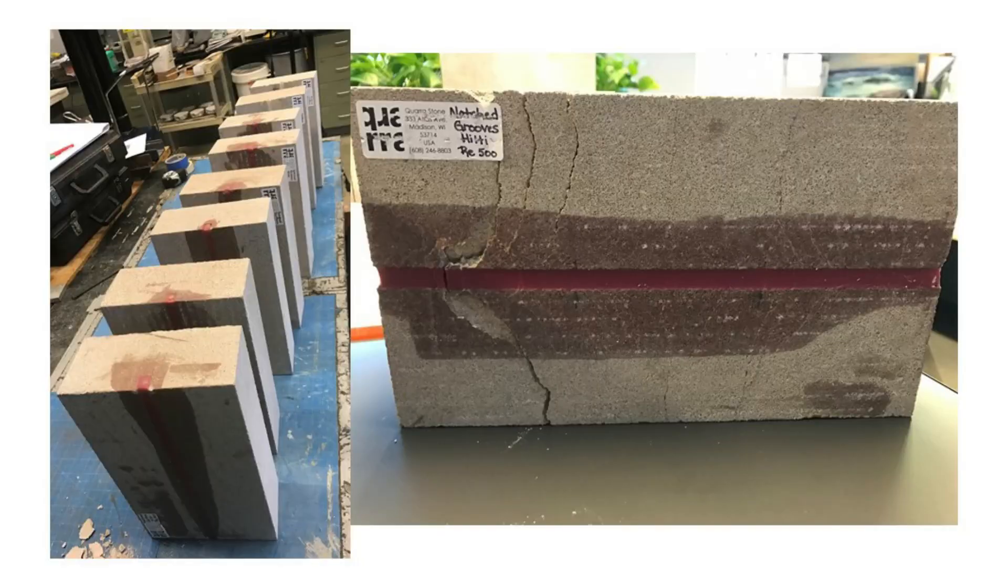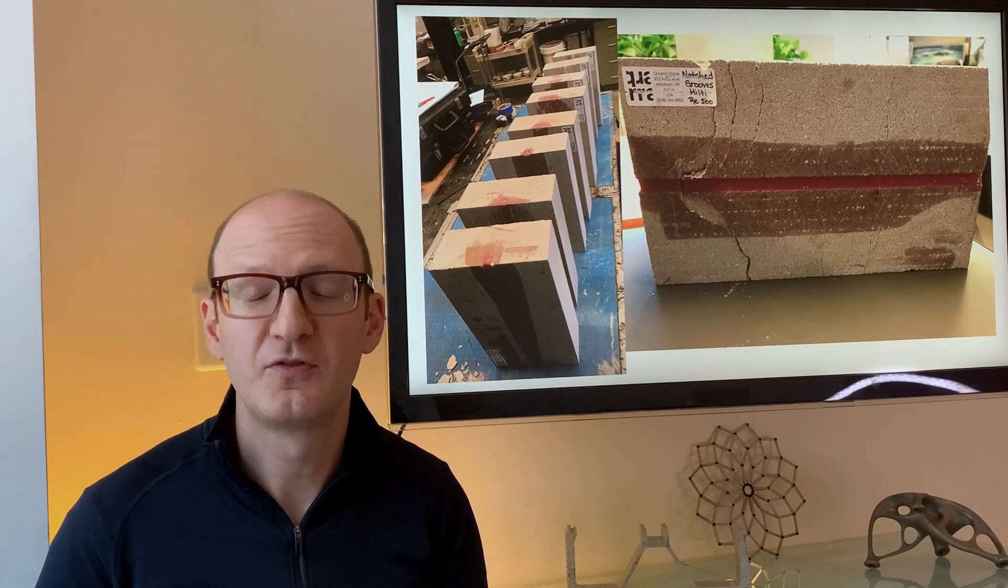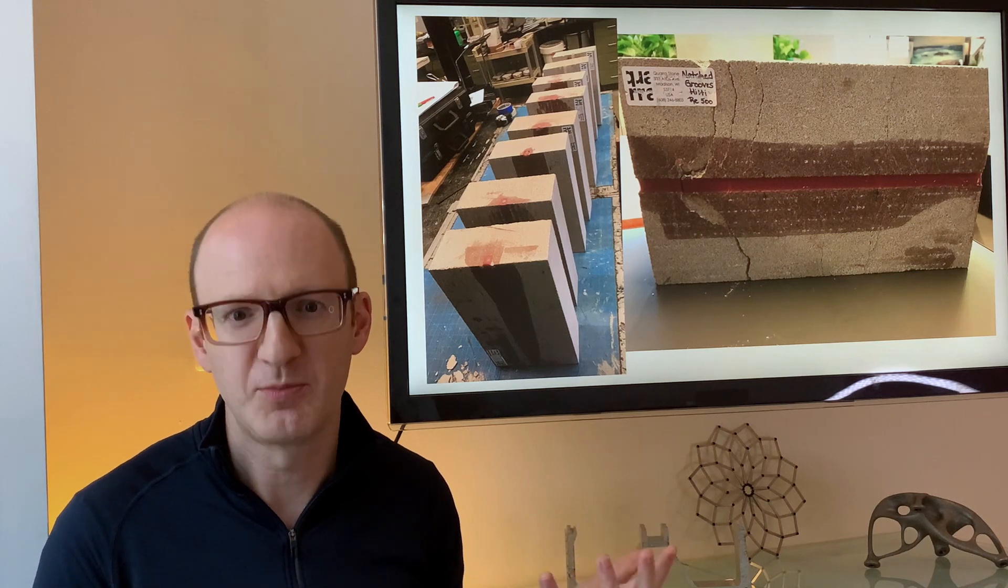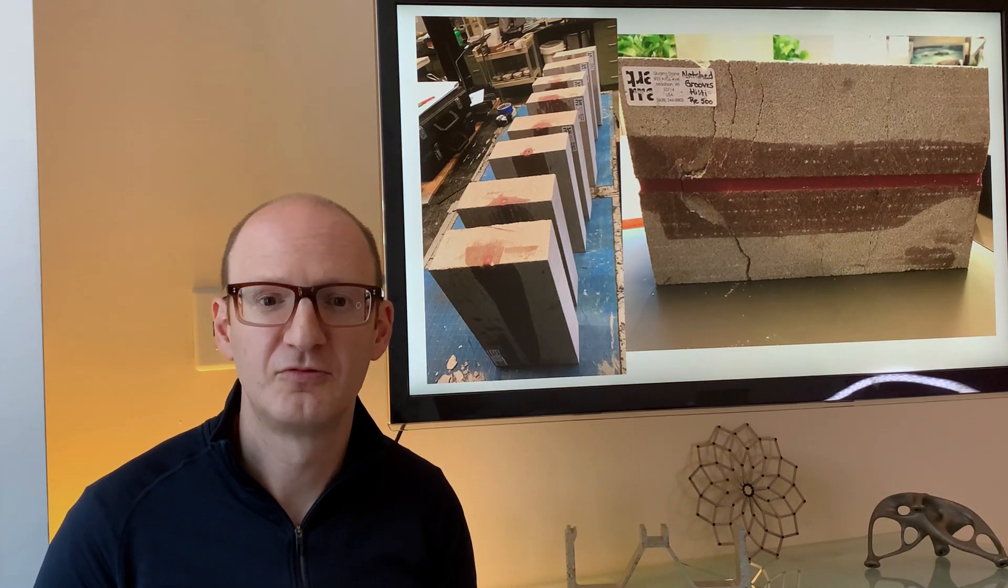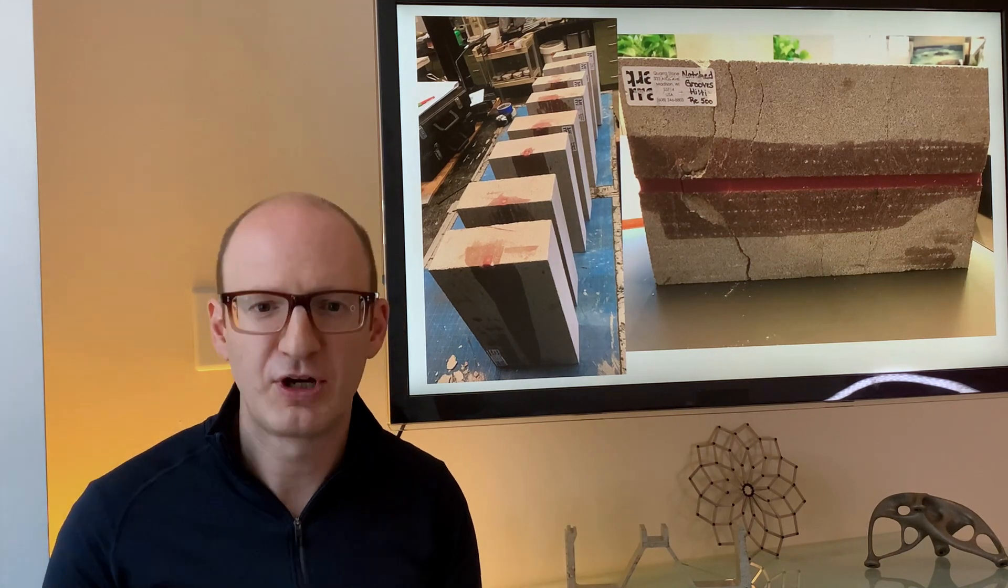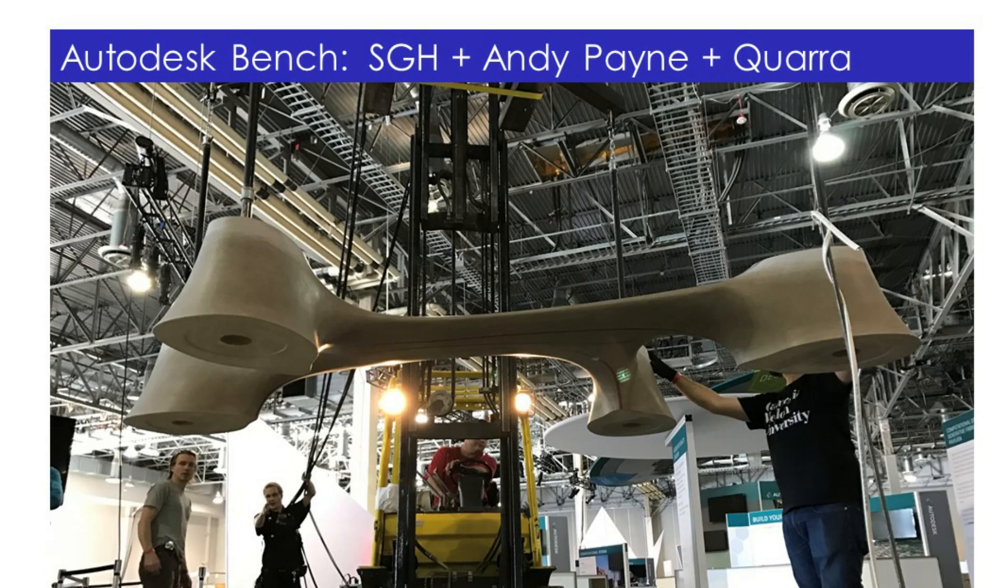We actually combined—this is some physical testing in our testing lab—we combined one of the oldest structural materials, stone, with one of the newest, which is GFRP, glass fiber reinforced plastic rods, putting them together as a composite, really old and new, compression and tension, to work together to create a truly wonderful thin stone bench.